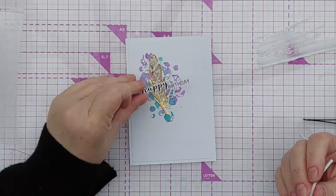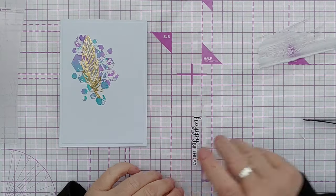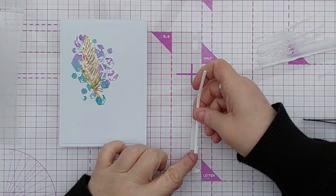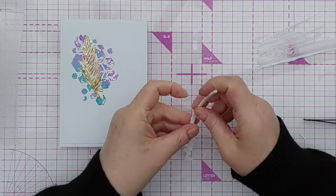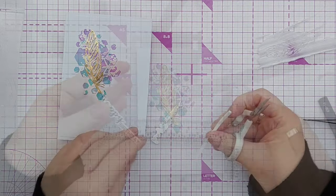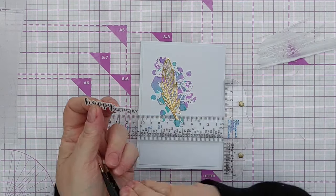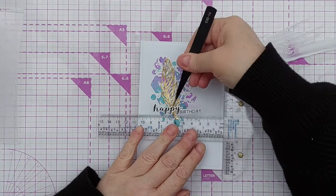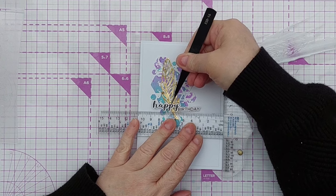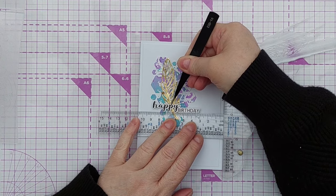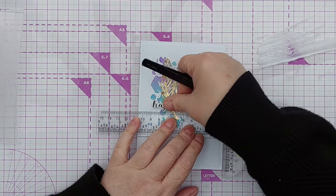And I've got this pre-printed, pre-cut sentiment that says happy birthday. And I can pop some of this skinny foam tape on the back. Just pop my T-square ruler on there again because I want to get the sentiment straight. Pop it over the base of the feather. Like that.